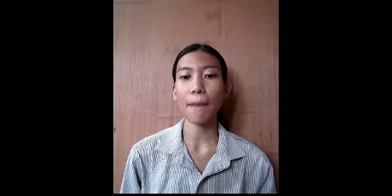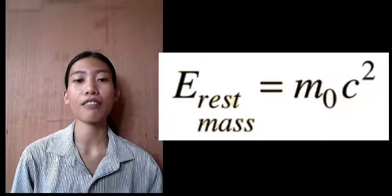The first postulate of relativity states that the laws of physics are the same in all inertial frames. Einstein showed that the law of conservation of energy is valid relativistically if we define energy to include a relativistic factor. Einstein's famous equation tells you that an amount of mass has an equivalent amount of energy.